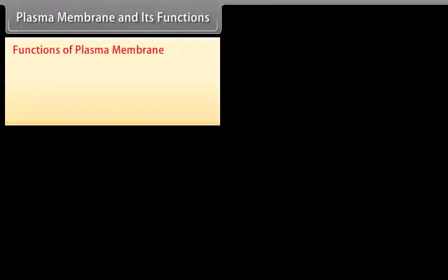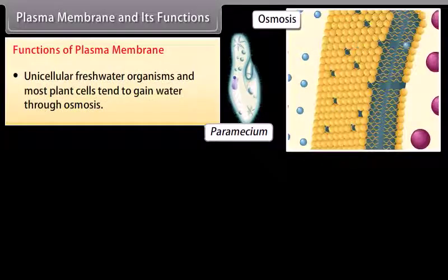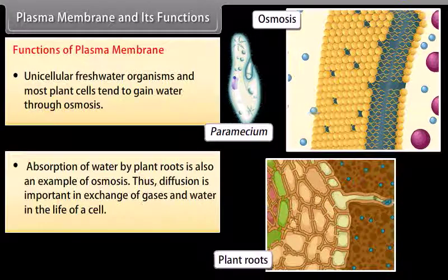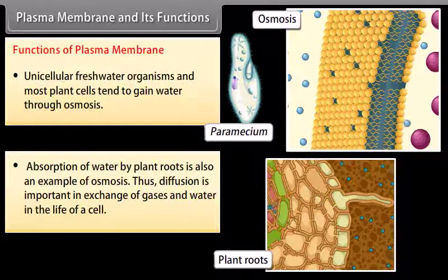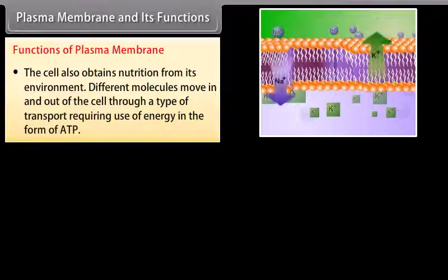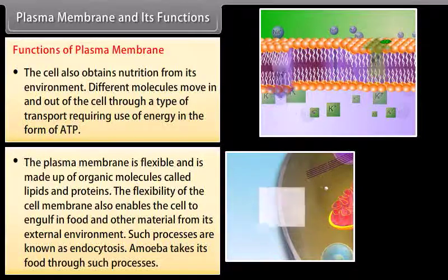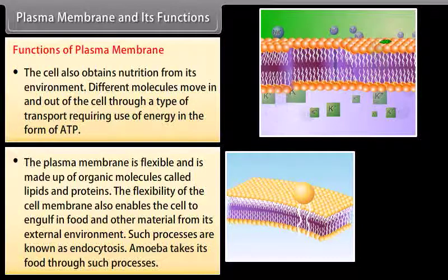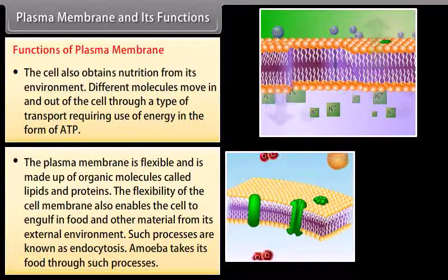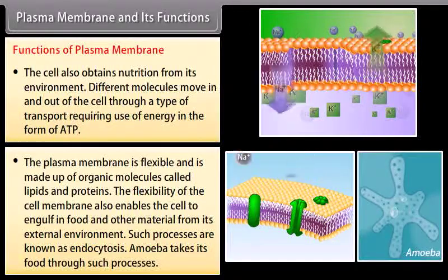Unicellular freshwater organisms and most plant cells tend to gain water through osmosis. Absorption of water by plant roots is also an example of osmosis. Diffusion is important in the exchange of gases and water in the life of a cell. The cell also obtains nutrition from its environment; different molecules move in and out through active transport requiring energy in the form of ATP. The plasma membrane is flexible and made up of organic molecules called lipids and proteins. This flexibility enables the cell to engulf food and other materials from its environment through a process known as endocytosis — amoeba takes its food through such processes.